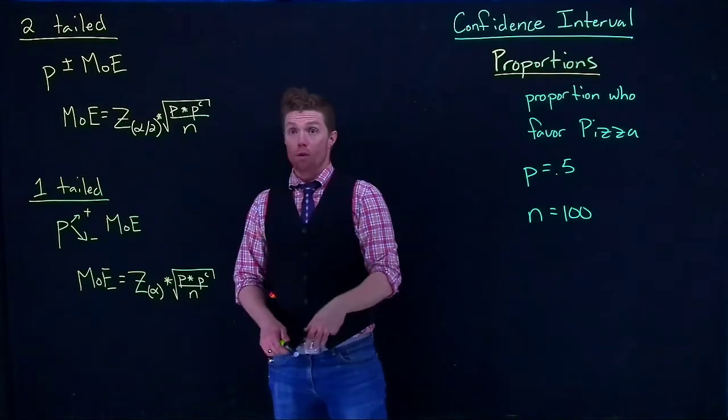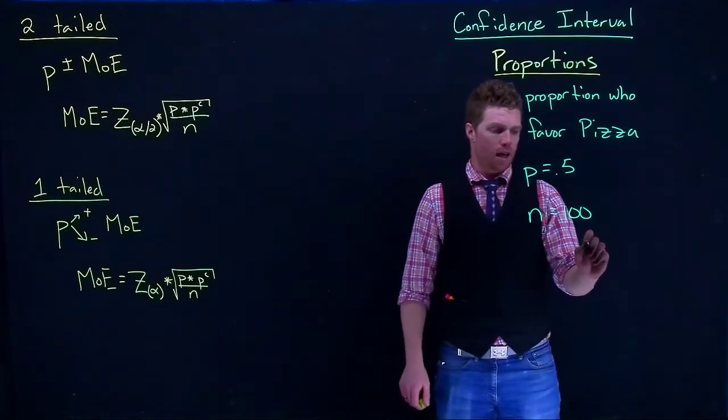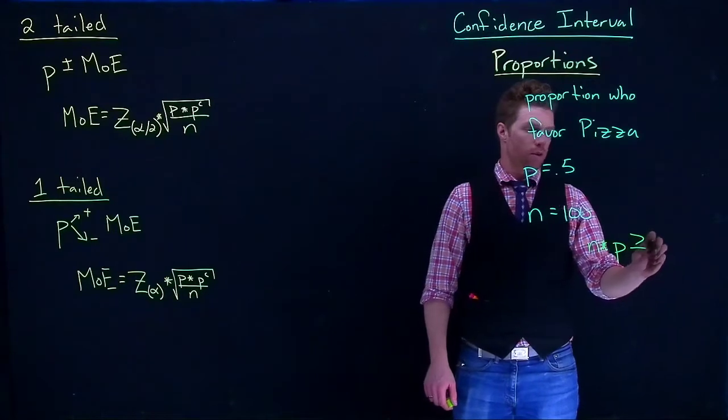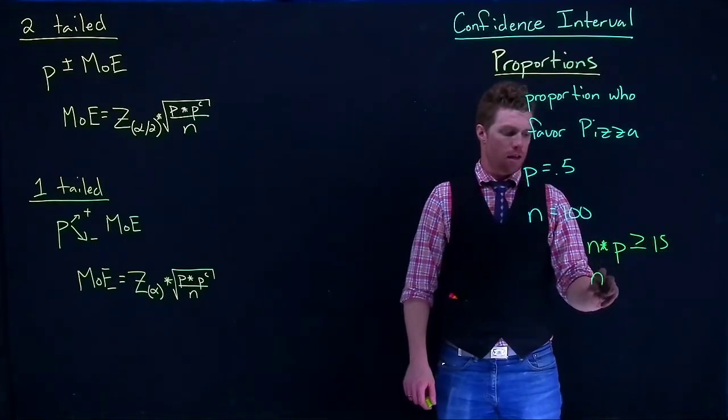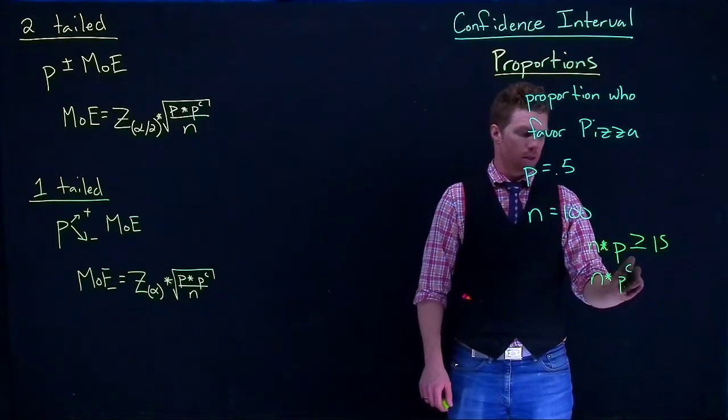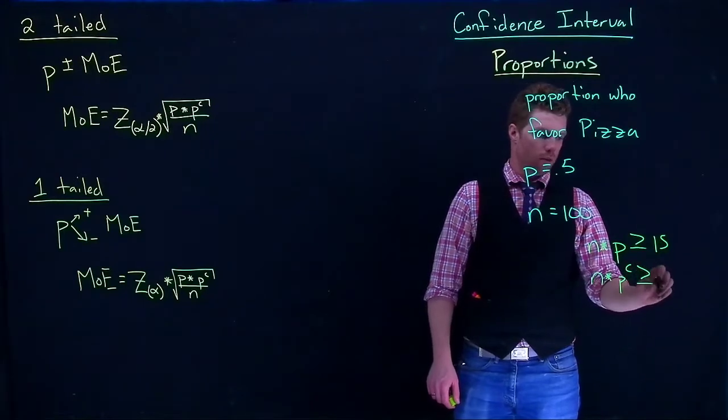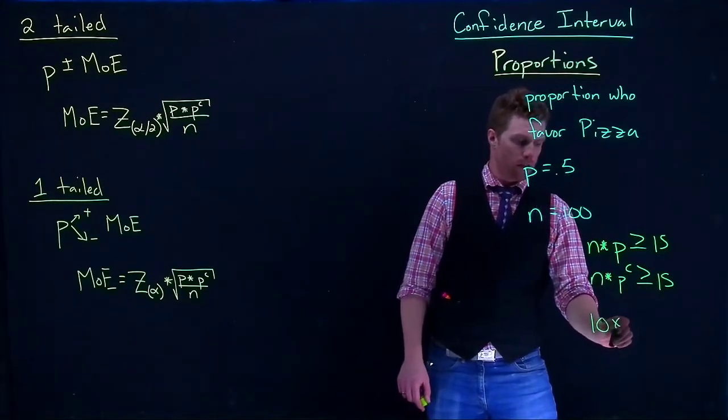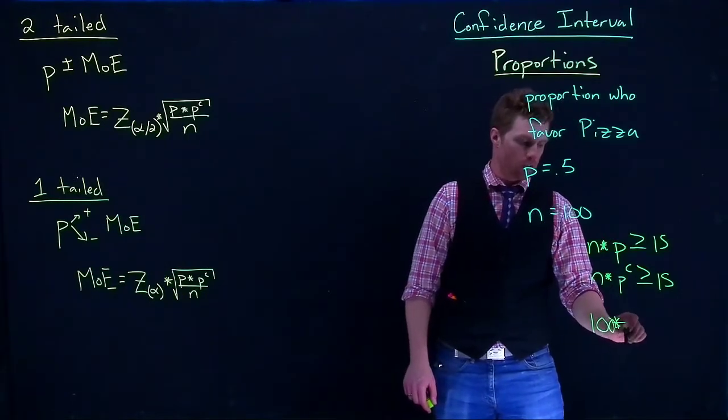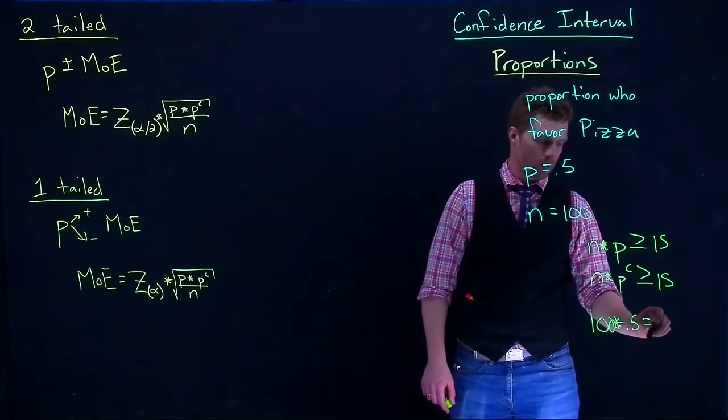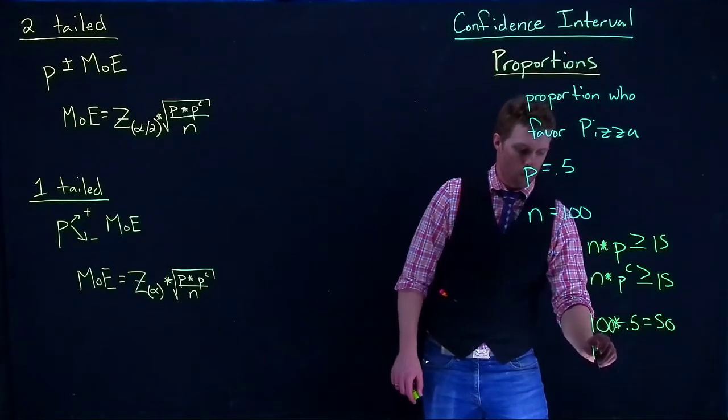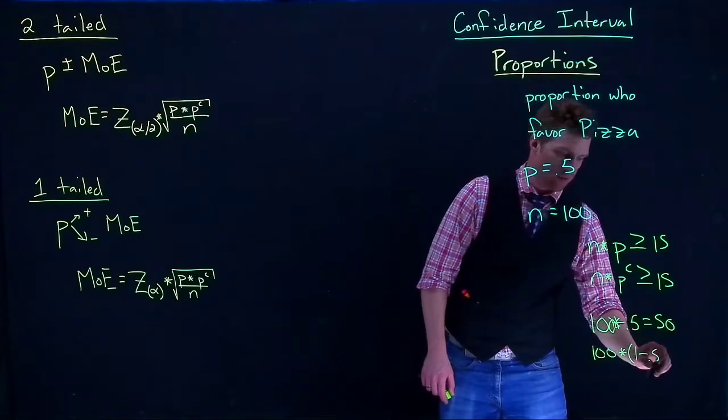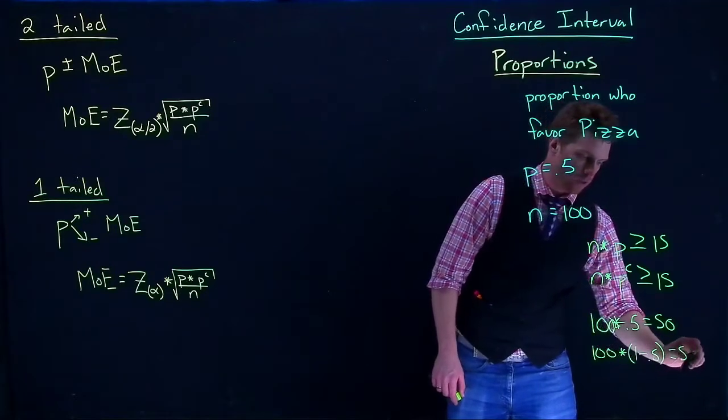For both of these we need to do a check and make sure that n times p is greater than or equal to 15, and n times p complement is greater than or equal to 15. So we've got 100 times 0.5.